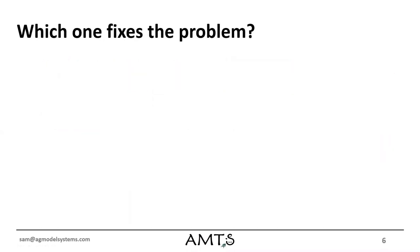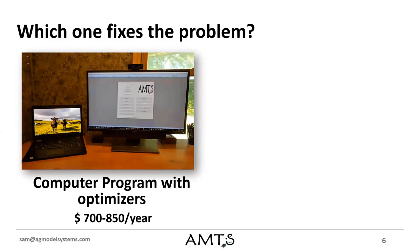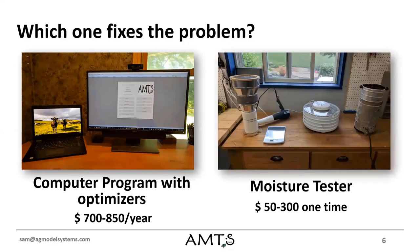When we're going to implement that change, what should we use to fix the problem? Of course AMTS will sell you a computer program, but that's probably not going to fix the problem if the problem is related to diet implementation. We can formulate a great diet in the program and use optimizers to do so efficiently, but if the implementation on the farm is where the problem rests, then the program's not going to help you. We really should be focusing on something like a moisture tester if we're trying to fix dry matter problems, or protocols if we're trying to fix variability in feed management or feed bunk management.